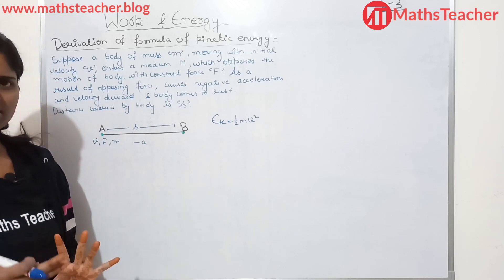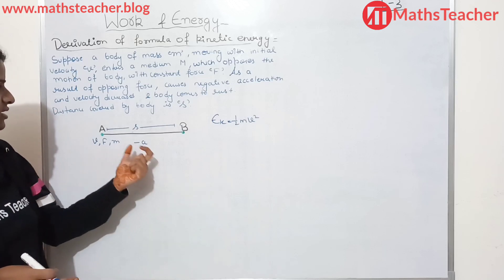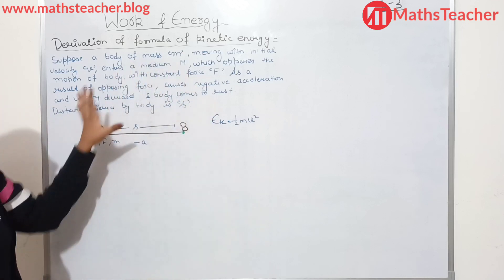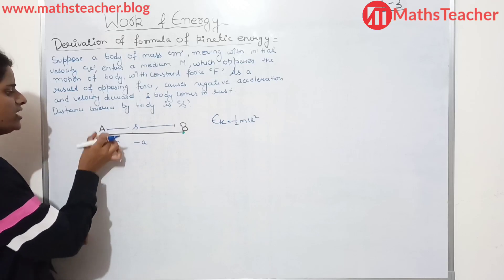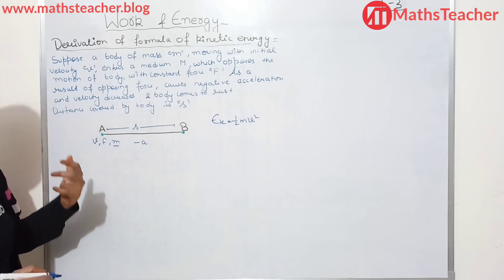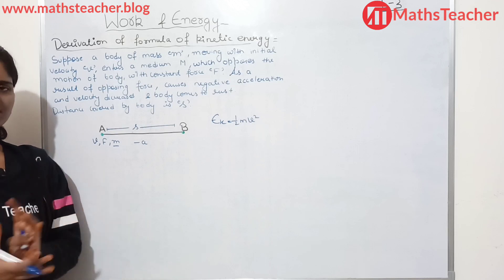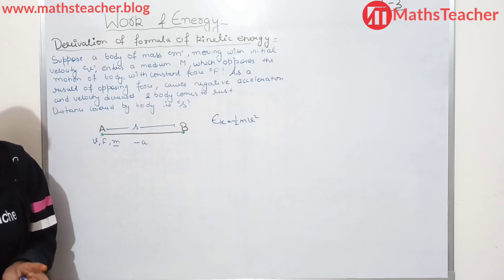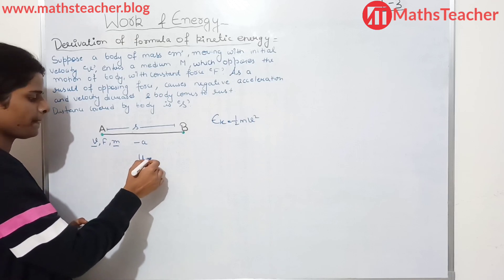A body is on point A and its mass is M. The body moves with some velocity. Which velocity — final or initial? We will say initial. We assume initial velocity as V and final velocity as zero. The kinetic energy formula uses a single velocity term V. Like the momentum formula P = MV, we represent velocity as V.